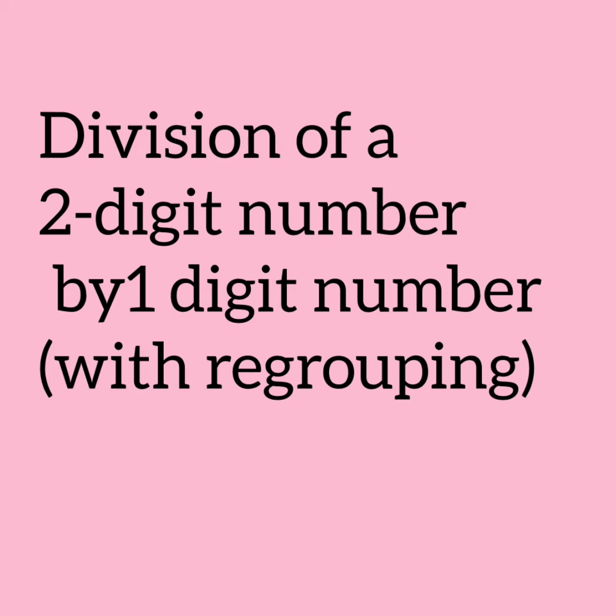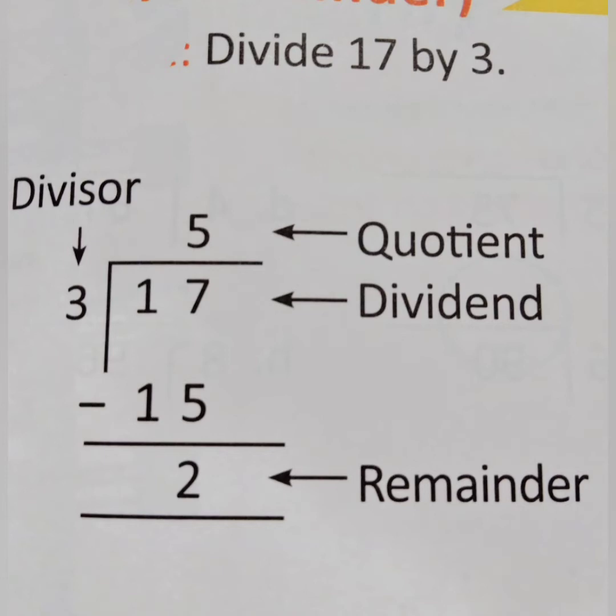Now let's recall. Divide 17 by 3. Here 17 is the dividend and 3 is the divisor. Since 17 is not there in the 3's table, we are going to write 3 fives are 15. This 5 is the quotient.